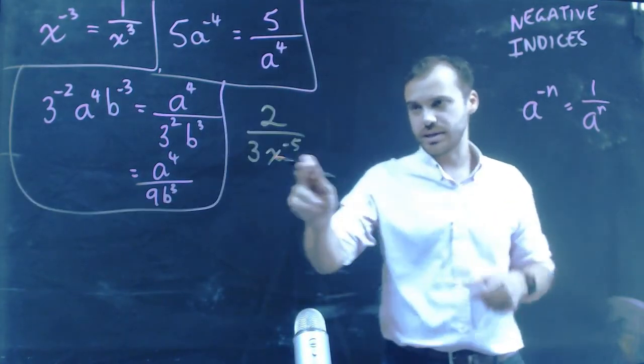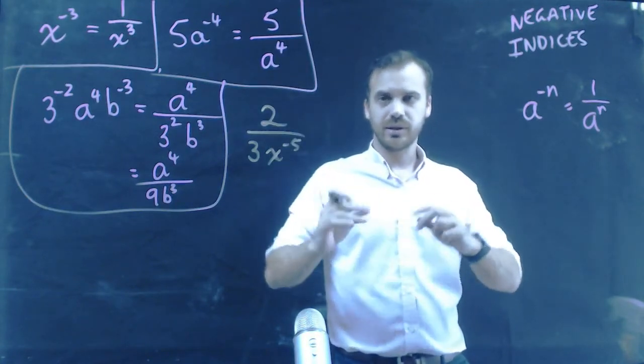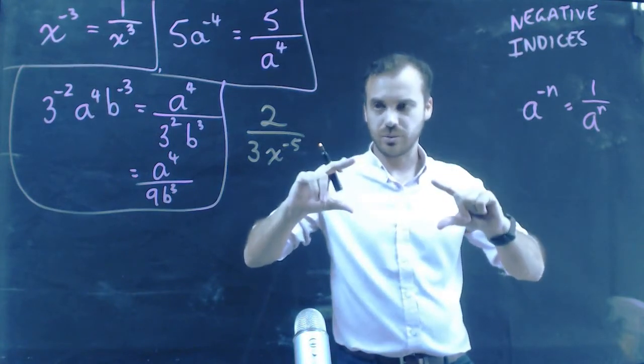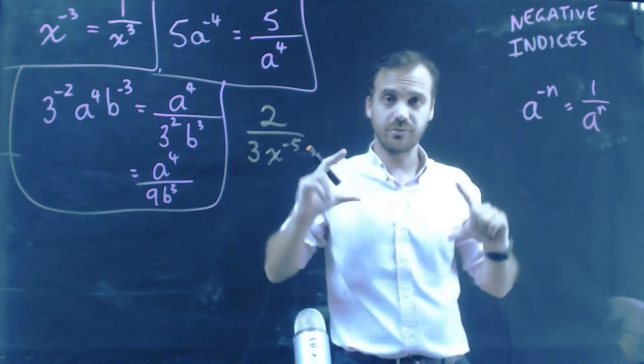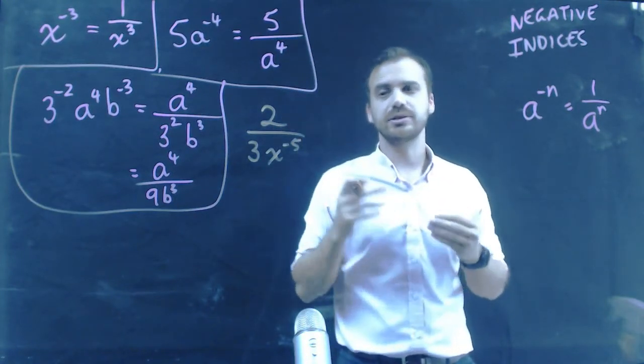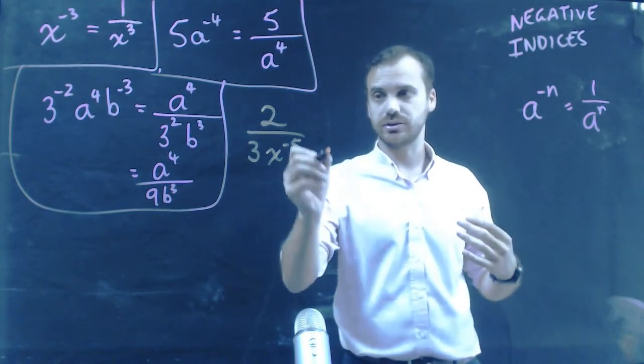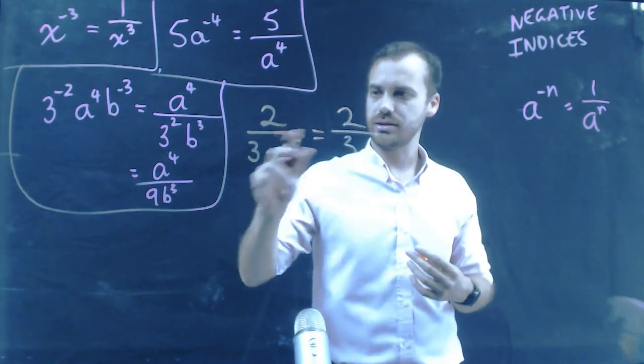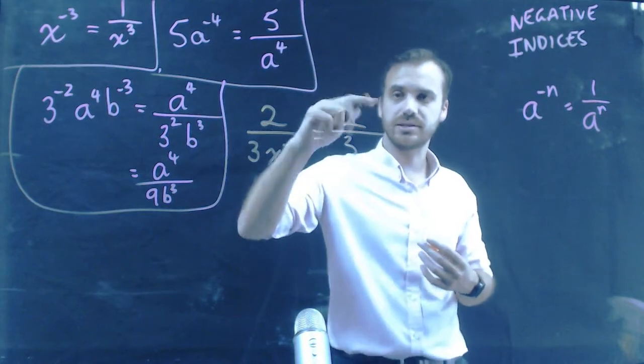So, 2 on 3x to the negative 5. So, we've got a negative power here, but it's on the bottom. What the negative indices really do is change it from the top of a fraction to the bottom of a fraction, but it can also take it from the bottom to the top. Basically, the negative indices are saying, I'm on the wrong side of the fraction. Put me on the other side of the fraction. So, this is 2 on 3, because the 3 is still on the right side, but the x to the negative 5 needs to come to the top.